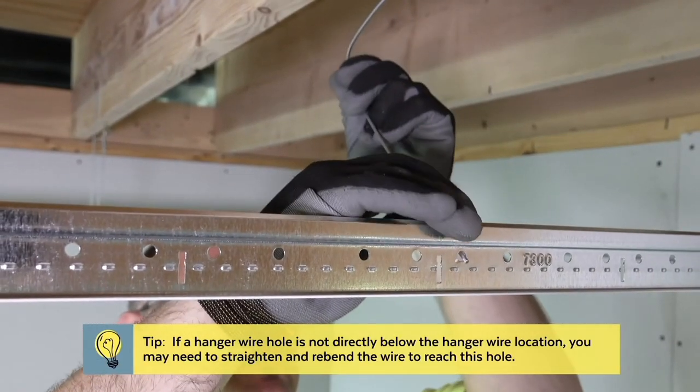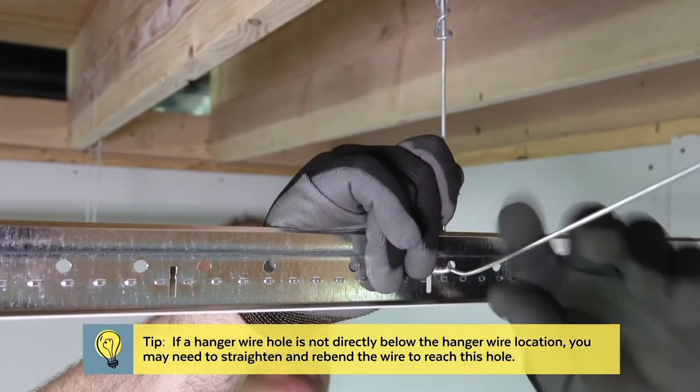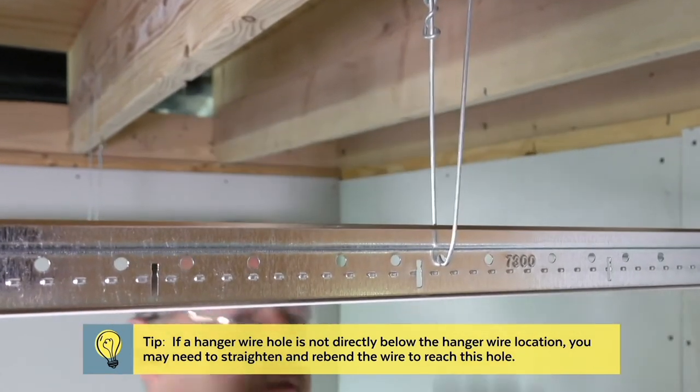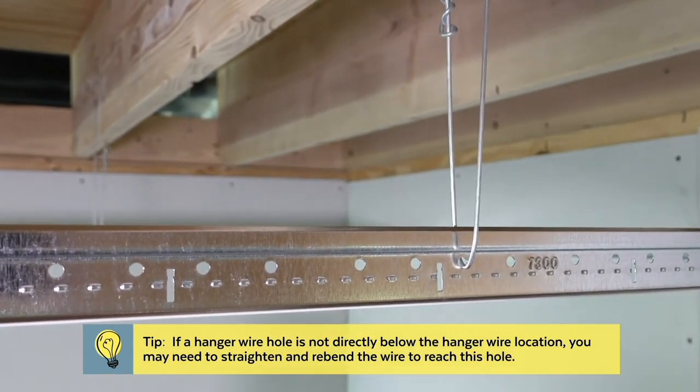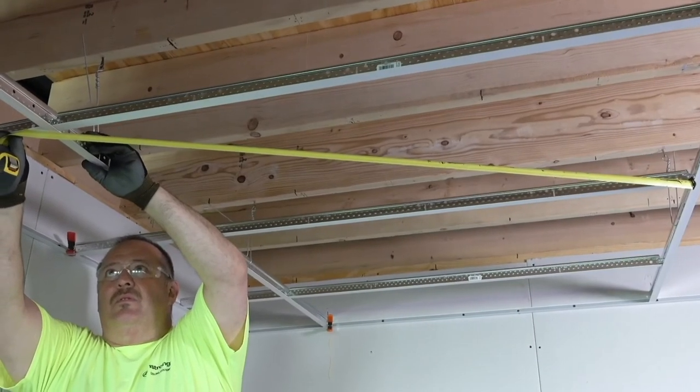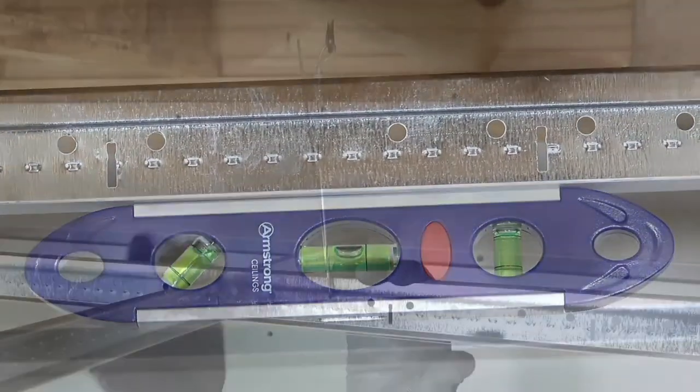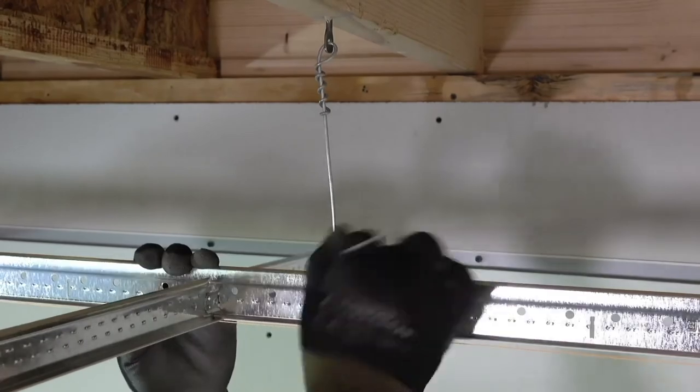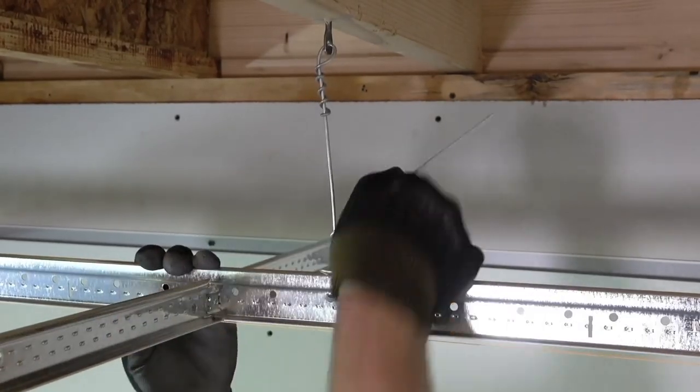Now hang the main beams on the wire by threading the bent wire through the round holes in the grid. Bend the wires straight up for a temporary hold. Once all main beams are hanging, check that they are level and finish attaching the wires by wrapping them around themselves 3 times.